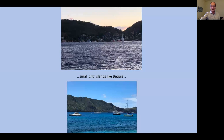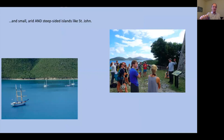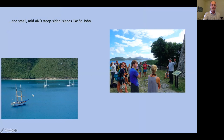Due to the pandemic we jumped from Bequia to St. John in our itinerary. We go from medium-sized and steep-sided with plenty of rain, to small and arid, to small, arid, and steep-sided as we can see in St. John. A couple of things to point out here: this is the Corwith Cramer in the bottom left in Francis Bay — I always like putting pictures of the Kramer in where I can. You can see the steep-sidedness clearly.